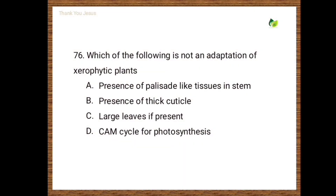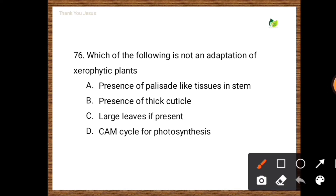Next question: Which of the following is not an adaptation of xerophytic plants? Options are presence of palisade-like tissues in stem, presence of thick cuticle, large leaves if present, CAM cycle for photosynthesis. The correct option is large leaves.